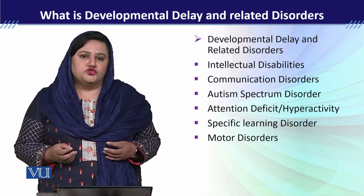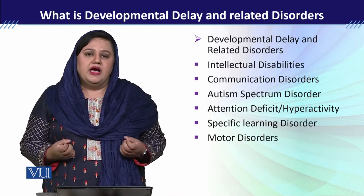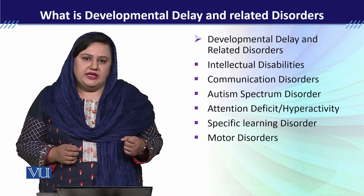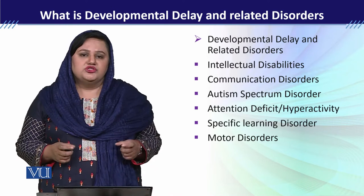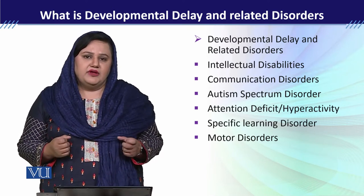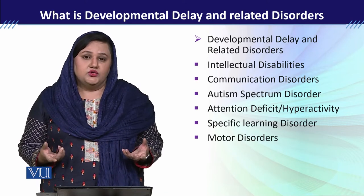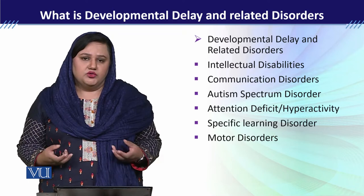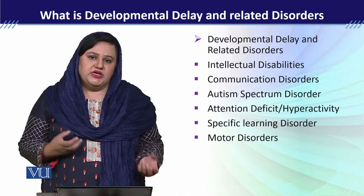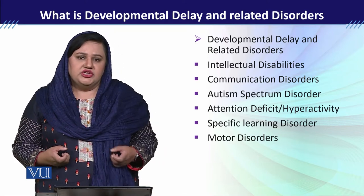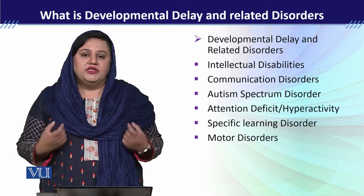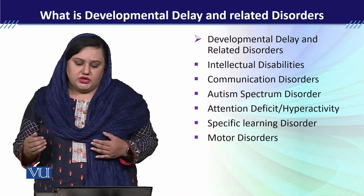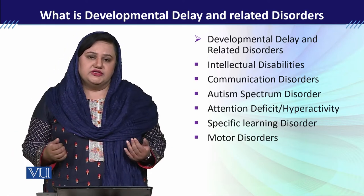Autism spectrum disorder ایک ایسا disorder ہے جس میں بچے کو social interaction اور communication میں problem ہوتی ہے۔ اس میں بچہ eye contact maintain نہیں کر سکتا، اس کی language develop نہیں ہوئی ہوتی، اور اس کے بہت سارے stereotypical behaviors ہوتے ہیں جیسے hand flapping، clapping، head banging، اور خود کو injury کرنا۔ یہ بھی childhood disorder ہے اور اس کی occurrence بھی early childhood میں ہوتی ہے۔